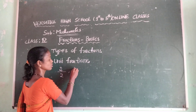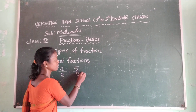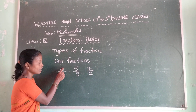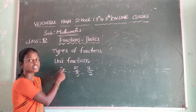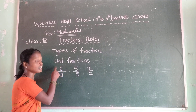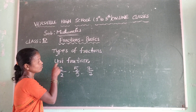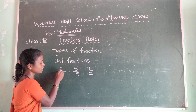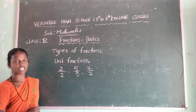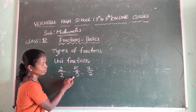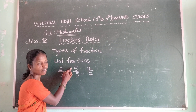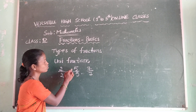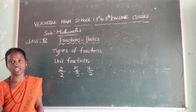Observe: two by two, five by five, seven by seven. Here, the numerator and denominator are the same. So we are calling this a unit fraction. In a unit fraction, numerator and denominator are the same. Observe five by five — what is the numerator? Five. And denominator? Five. Both are same. So we are saying that this is called a unit fraction.